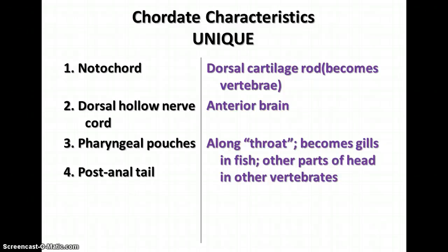Here are the characteristics unique to Phylum Chordata. The notochord is a dorsal cartilage rod — dorsal meaning the upper surface — and in vertebrates this becomes the vertebra, or backbone. The dorsal hollow nerve cord with an anterior brain is one of the main features distinguishing chordates from other animals. The pharyngeal pouches are located along the throat; in fish and some amphibians they become gills, and in other animals they develop into other head structures. In humans, the pharyngeal pouches in the embryo actually develop into the bones of the inner ear. All of these characteristics must be present at some point in the organism's life — in some animals, like humans, they're only found in the embryo stage. We had a post-anal tail as embryos, which we saw when comparing embryos during our study of evolution.